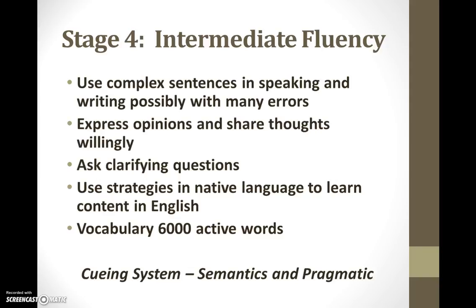Students will use more complex sentences in speaking and writing at the intermediate fluency stage. They are more willing to express their opinions, share their thoughts, and ask clarifying questions. This is an example of using the cueing system of semantics, where we focus on vocabulary or word meanings. Since students are focusing on appropriate use of vocabulary, there may be many grammar and sentence structure errors at this point. Students will also begin to use strategies from their native language to learn English content. This is an example of the pragmatic cueing system, where students use their background knowledge and meaningful context to help comprehend communication.